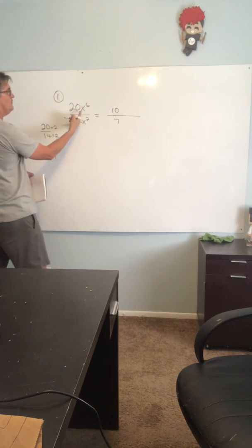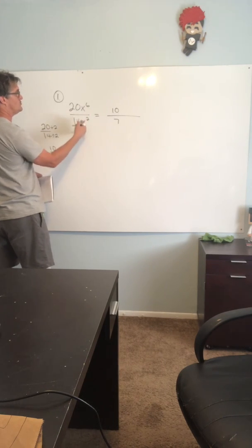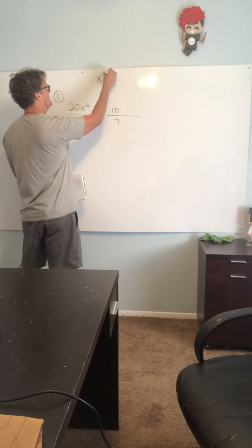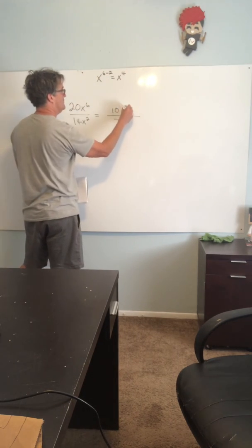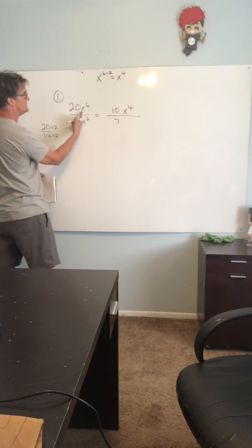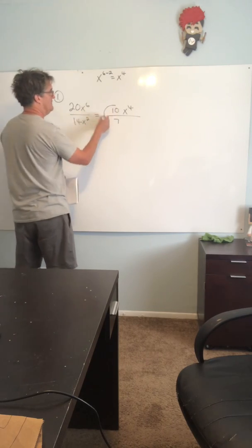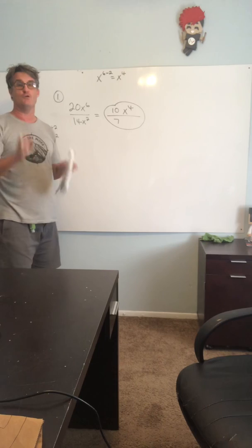So in my new fraction, just like normal, just reduce those coefficients like you have been. And then with your variables, if you have the same base, you keep the base and you subtract the exponents. So you've got x to the 6 take away 2, which is x to the 4th power. Put it here because there's more. There were six factors of x in the numerator, two factors in the denominator, there's more in the top.